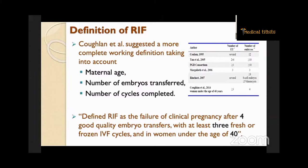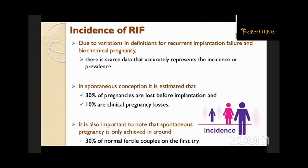Regarding incidence, due to variation in definitions for recurrent implantation failure and biochemical pregnancy, there is scarce data that accurately represents the incidence or prevalence. In spontaneous conception, it is estimated that 30% of pregnancies are lost before implantation and 10% are clinical pregnancy losses. It is also important to note that spontaneous pregnancy is only achieved in around 30% of normal fertile couples on the first try.